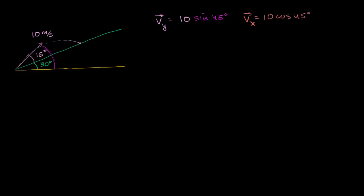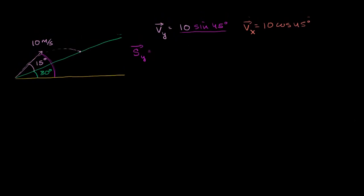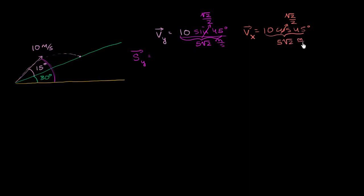Now let's think about the displacements. The sine of 45 degrees is √2/2, and cosine of 45 degrees is also √2/2. So both components equal 10 × √2/2 = 5√2 meters per second. That's our vertical velocity, and our horizontal velocity is also 5√2 meters per second.